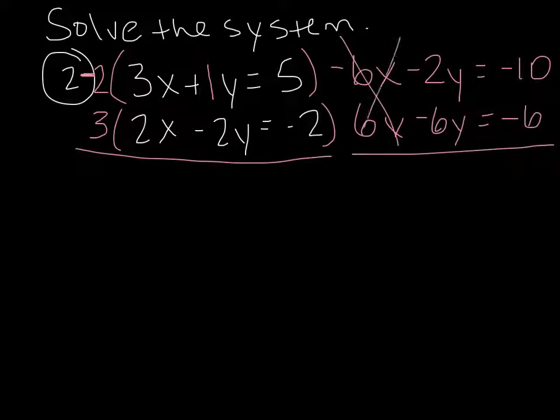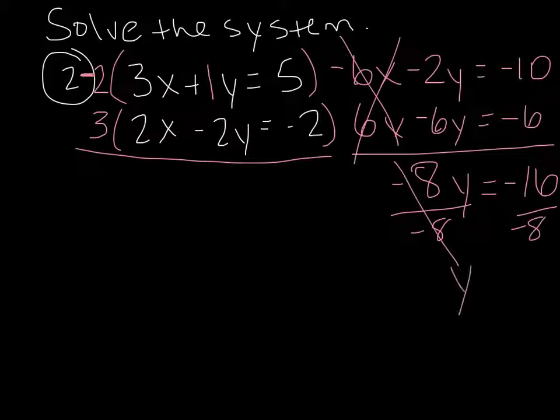Then you can add straight down. Those are cancelled. Negative 2y plus a negative 6y is negative 8y. And negative 10 plus negative 6 is negative 16. Divide both sides by negative 8, and y equals a positive 2.